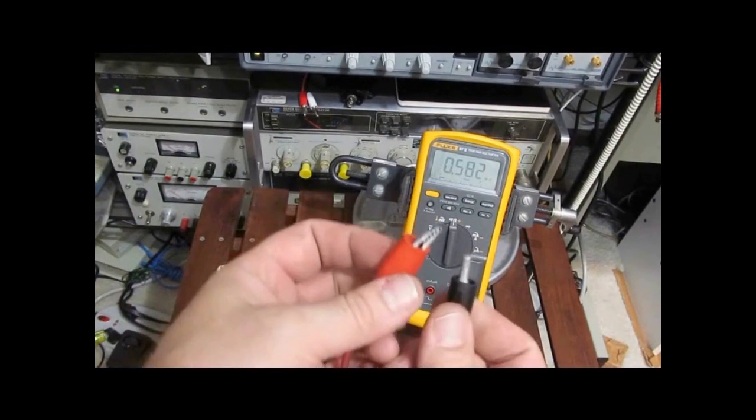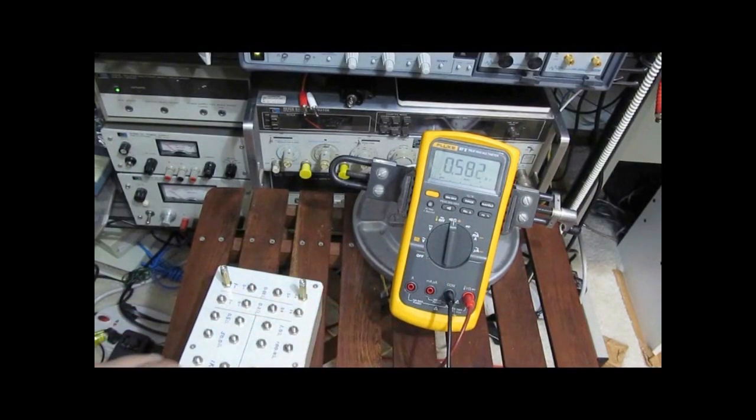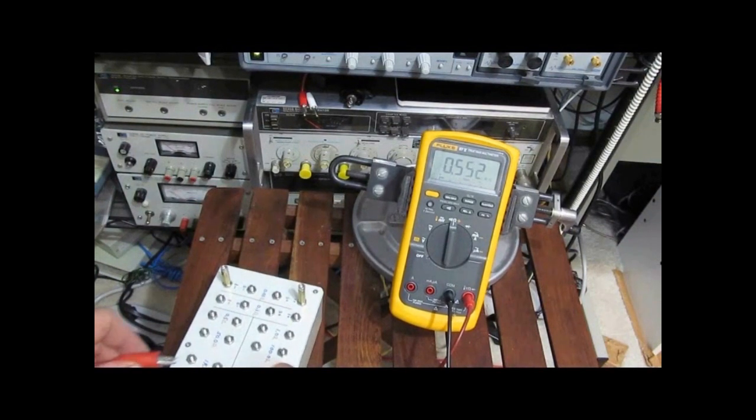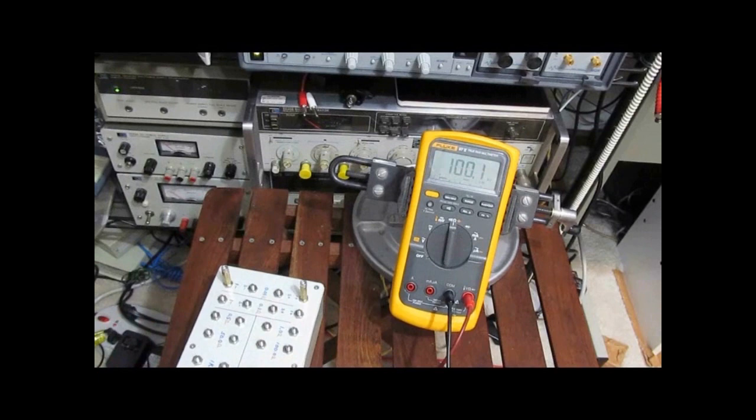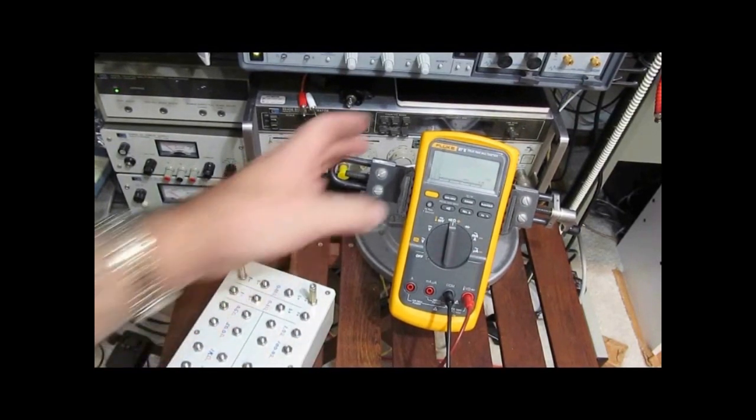But here's the problem. If I leave the leads off, you can see it's reading 500k. Put a 10 meg across it, that's what we read. 100k it'll read it just fine. One meg, can't do it.